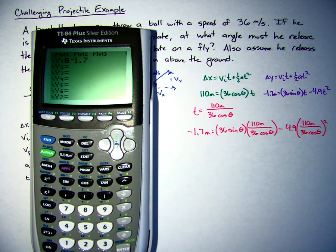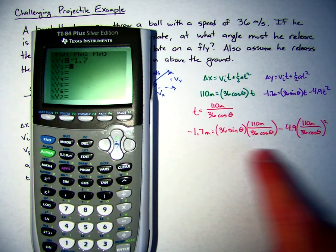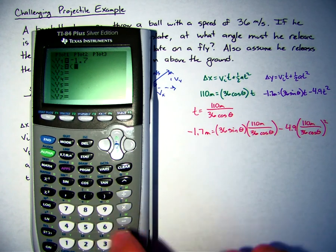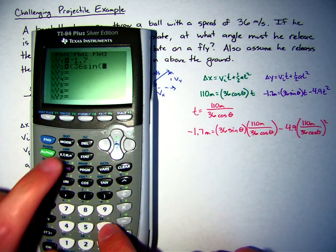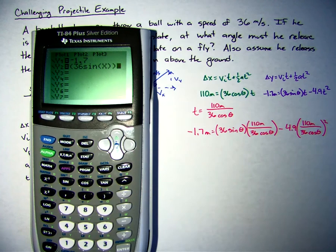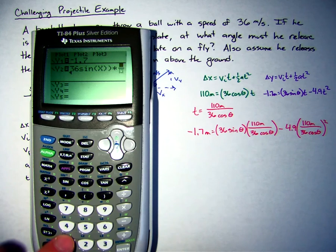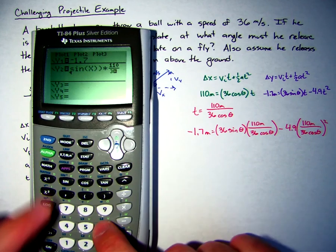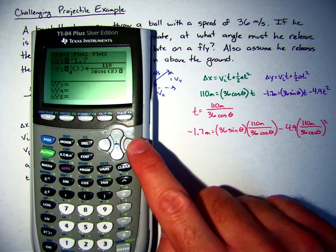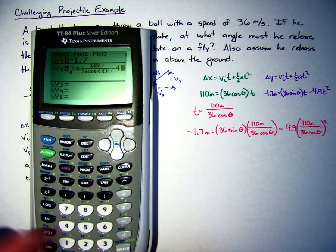So we can just set one side of the equation, negative 1.7 meters in y1, and we'll put the other side, the right side, into y2. This just takes a little bit more typing in. So if I type in 36 sine of theta, I'm going to call theta x just in this case, times, and I'm going to use my shortcut here to the fraction, 110 divided by 36 cosine of x minus 4.9.